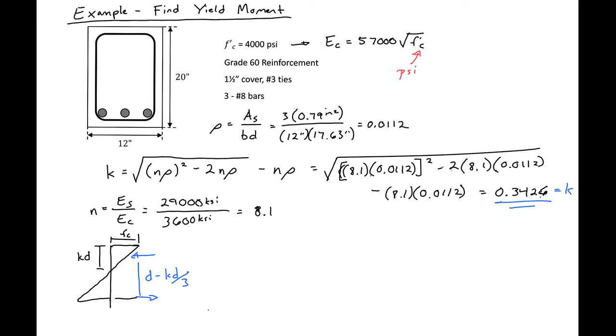Okay, so now we can find our kd. And our kd is just equal to our k, 0.3426 times our d, 17.63. And this will give us a value of 6.04.